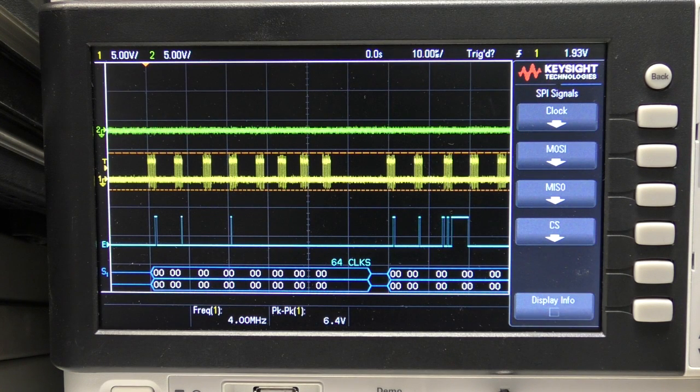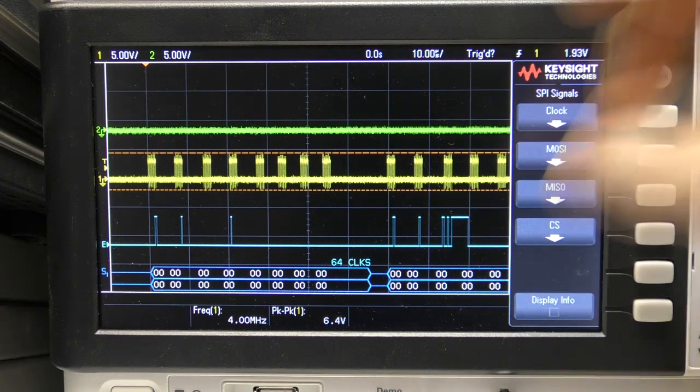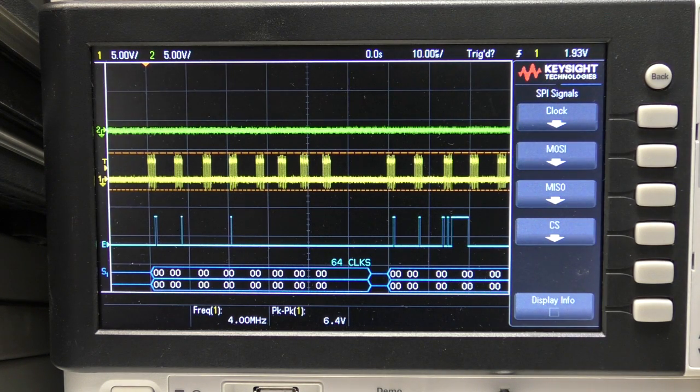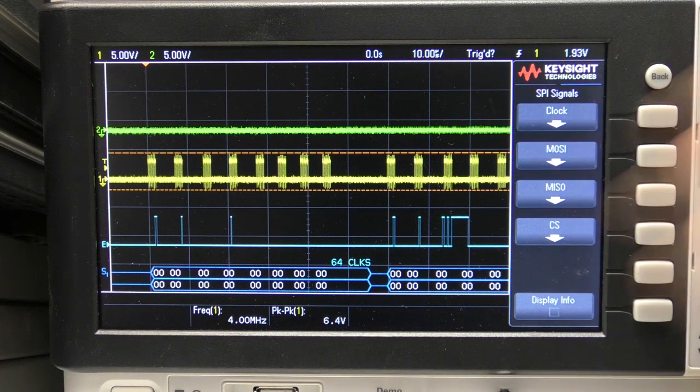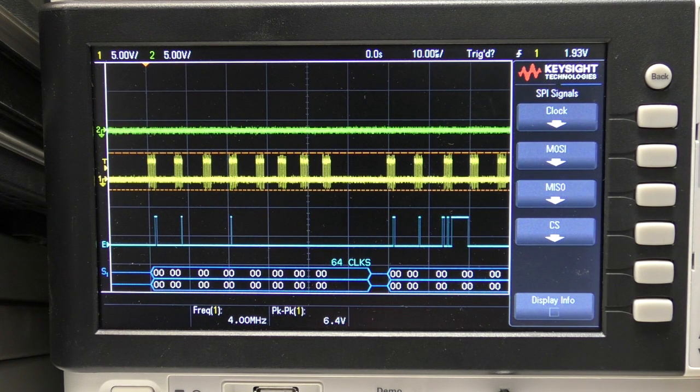Hopefully, they'll obviously update the data sheet and so on, but hopefully, they'll fix this issue with the decode, especially as decode is a paid option. If I'd paid for the SPI decode on a scope that has got three channels, I really would want to get data in both directions. It's a bit strange. So, I believe they are at least looking into it.